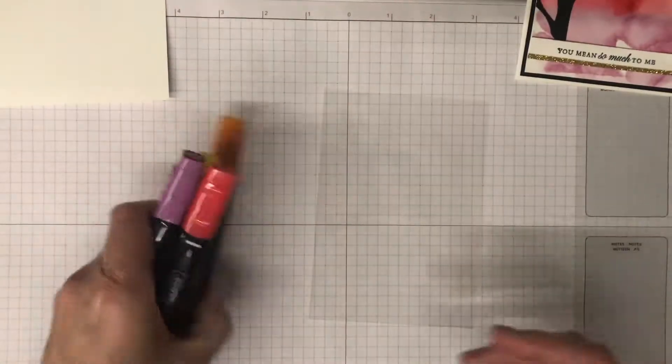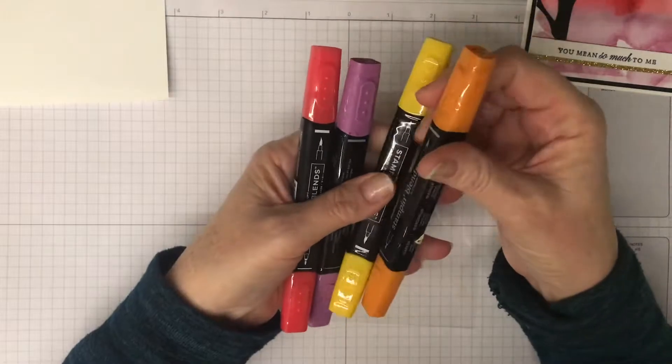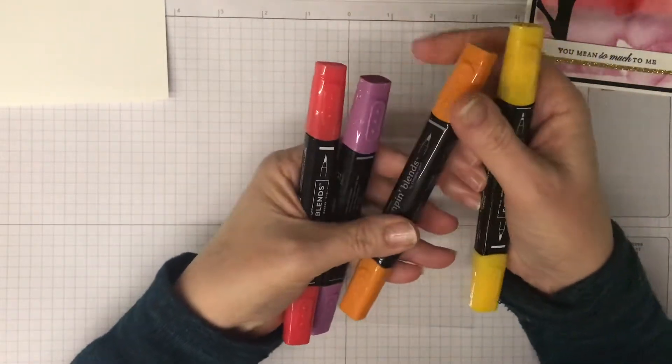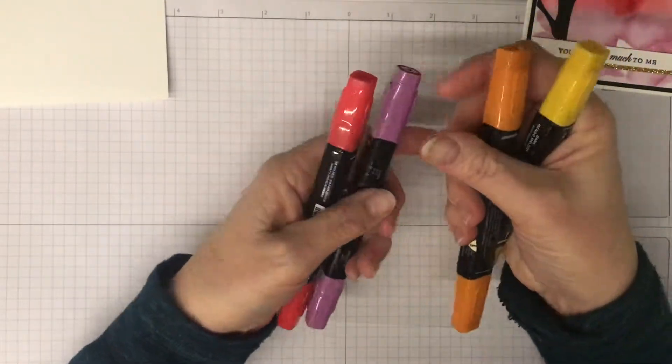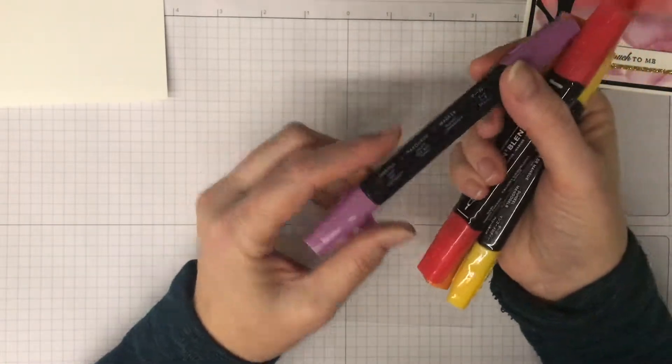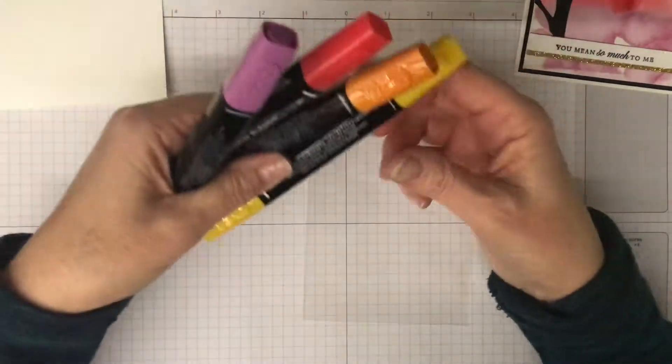You'll need some Blends markers. To get the sunset look, I've chosen this range of colors: I'm using Dark Mango Melody, Dark Pumpkin Pie, Poppy Parade, and also the dark of the Rich Razzleberry. So those are the four I'm using today.